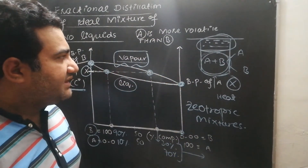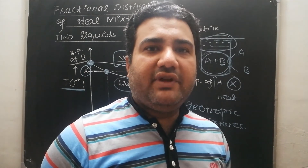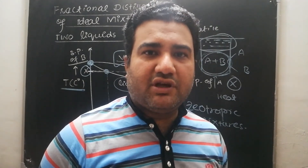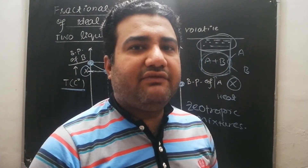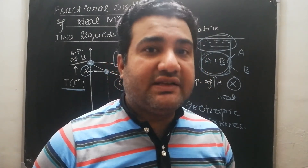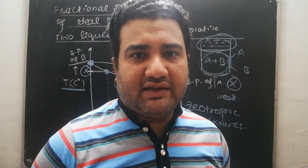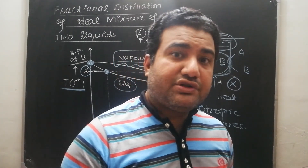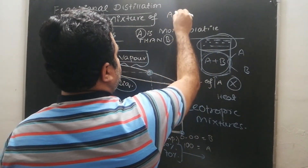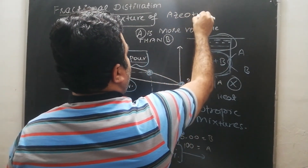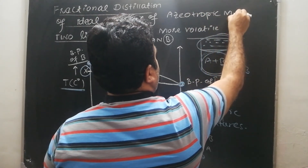These are zeotropic mixtures. However, some non-ideal solutions show positive or negative deviation from Raoult's law. When you distill them, their composition in the liquid and vapor states does not appreciably change, so their components cannot be completely separated by fractional distillation. Those non-ideal mixtures are called azeotropic mixtures.